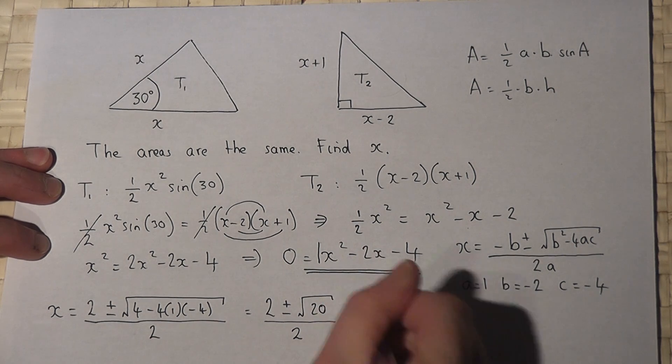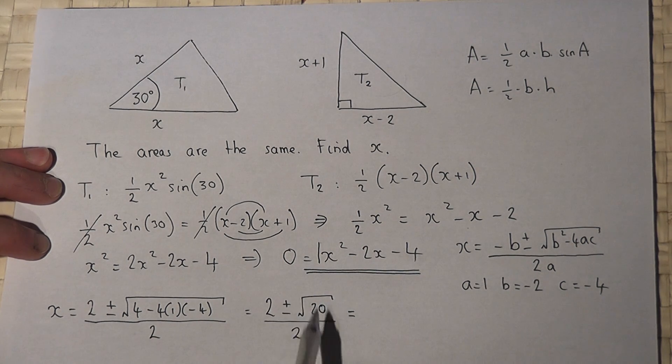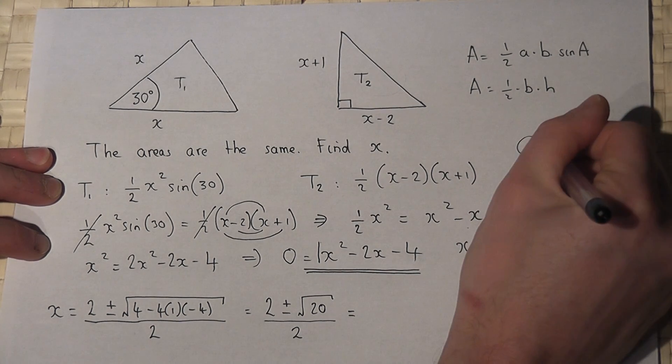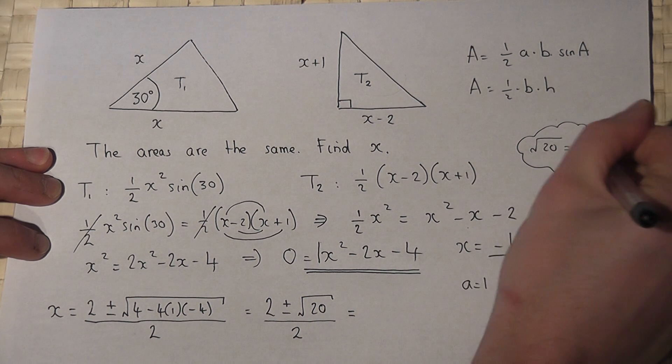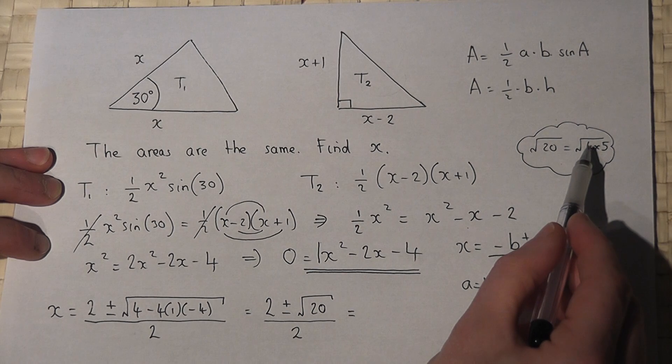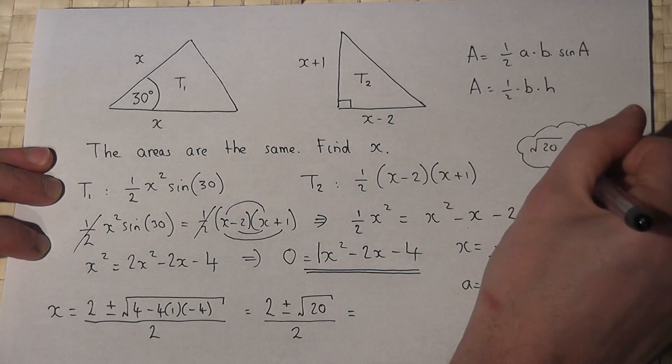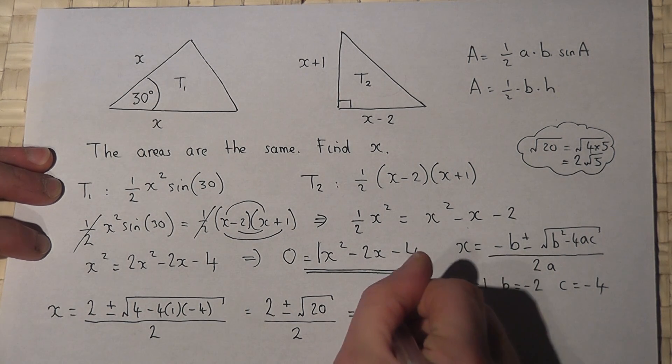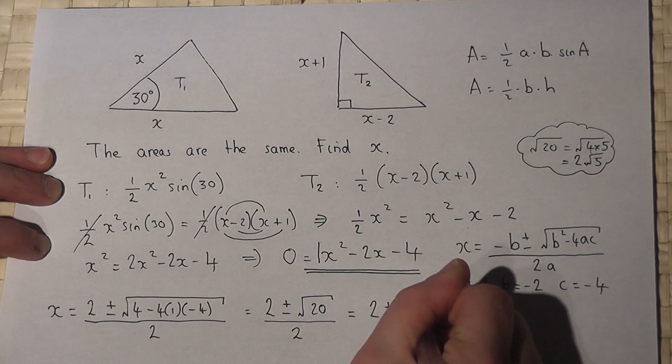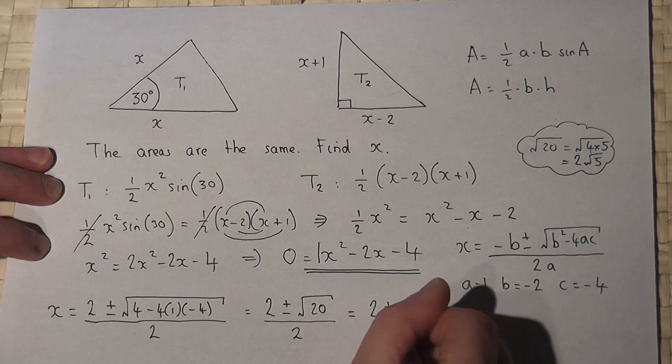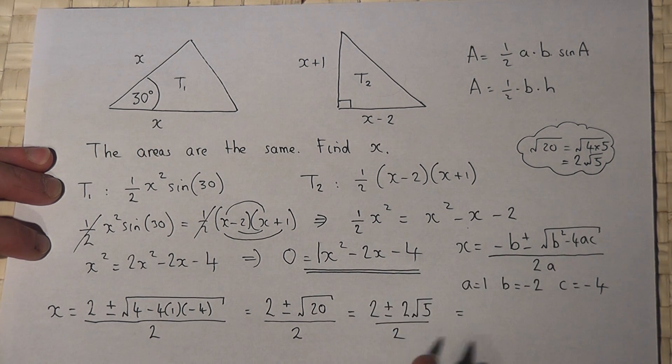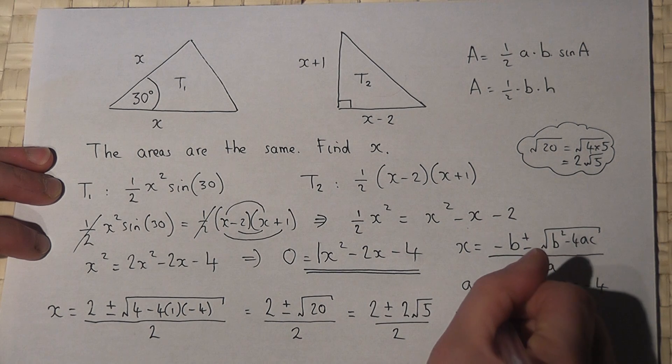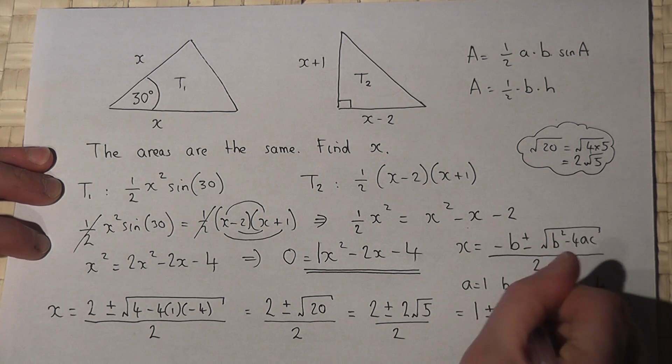Then to finish off, this surd can be simplified. Root of 20 is root of 4 times 5, and root of 4 is 2, so this becomes 2 root 5. So the answer is 2 plus or minus 2 root 5, all over 2. The 2s then all cancel and it becomes 1 plus or minus root 5.